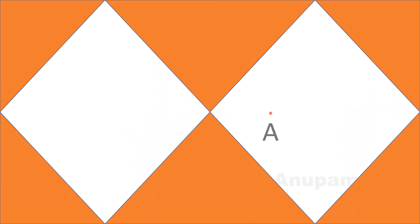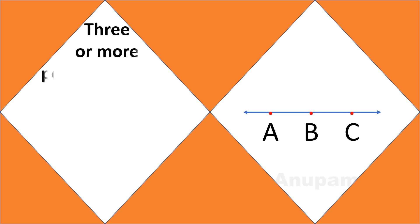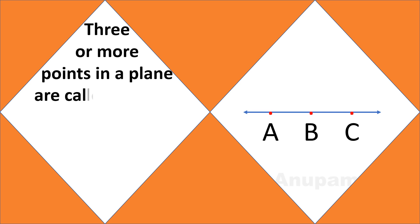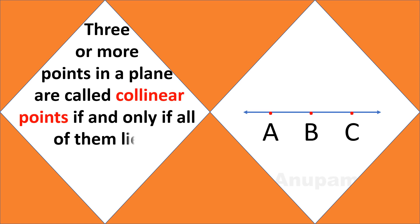There are three points — point A, point C, and point B — and all are on the same line. Three or more points in a plane are called collinear points if and only if all of them lie on the same line.